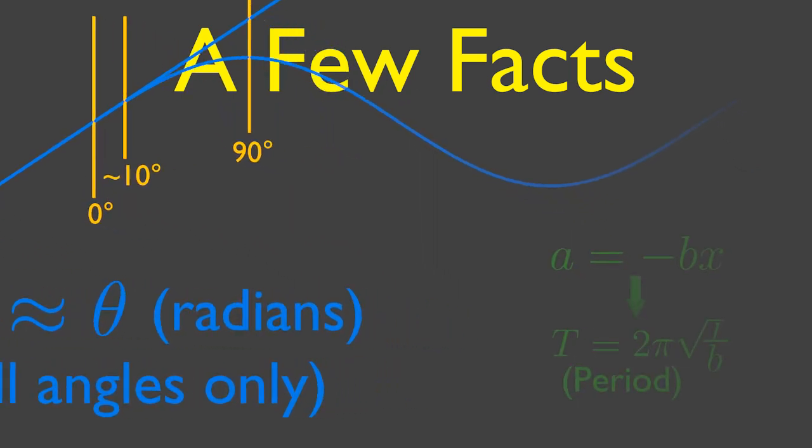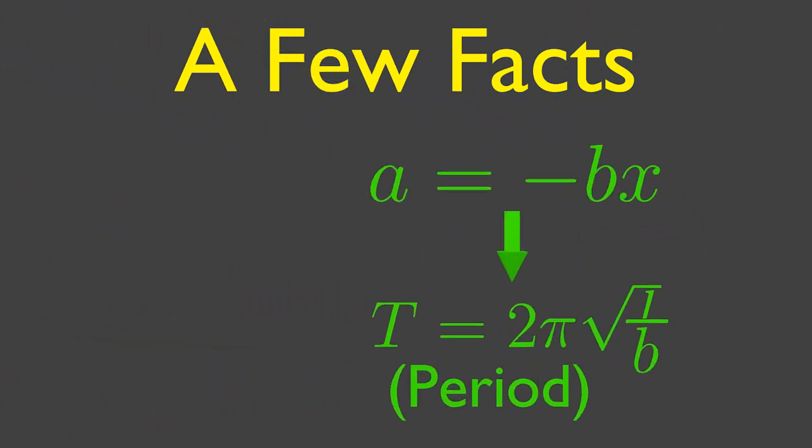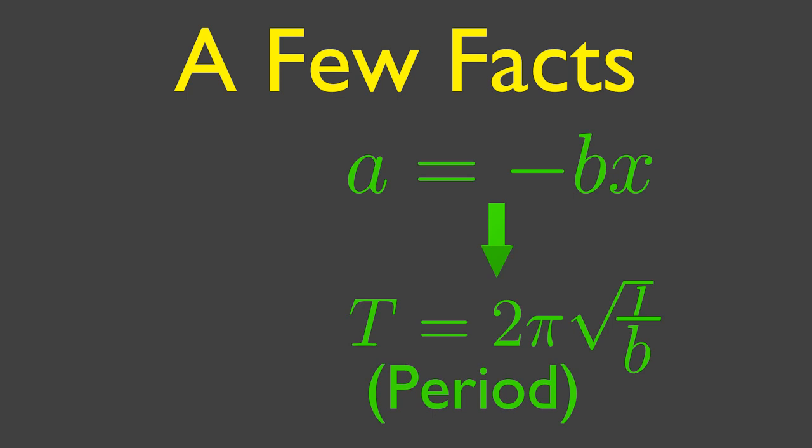Fact number two, when we have an equation of the form acceleration equals a negative constant times position, we can, using some math that you don't need to know, work out the period of that system. Two pi times the square root of one over that constant. Now we'll use these two facts to help us in understanding harmonic motion.